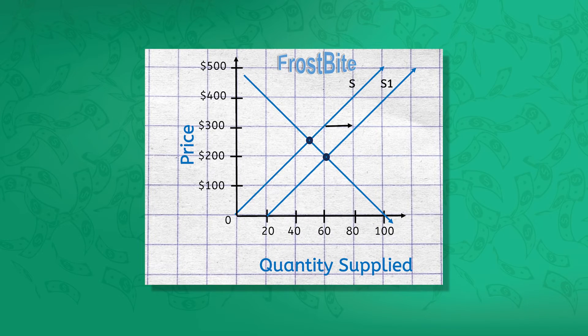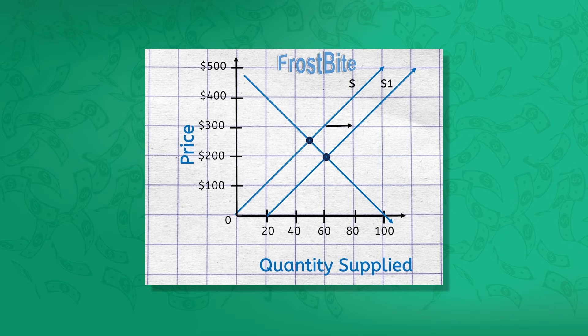On the other hand, let's consider a scenario where a technological advancement lowers the production costs of Frostbite 3.0. This leads to an increase in the supply of the consoles. As a result, the supply curve shifts to the right, indicating a higher quantity available at each price level. You can see that the market equilibrium is once again affected by this shift — the equilibrium price decreased to $200.